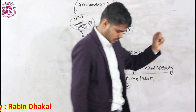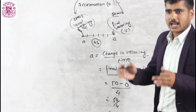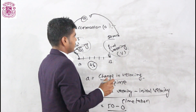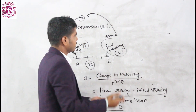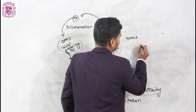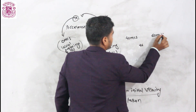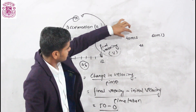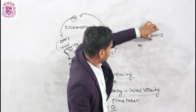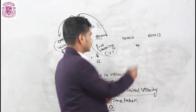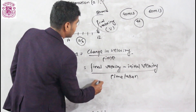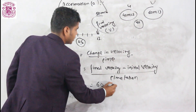It is not necessary for the body to start from rest. For example, if a body was moving at 40 meters per second at Chargobatu and after 4 seconds reaches Thimi at 60 meters per second, then the initial velocity is 40 m/s, final velocity is 60 m/s, and time taken is 4 seconds. The acceleration is 60 minus 40 divided by 4.